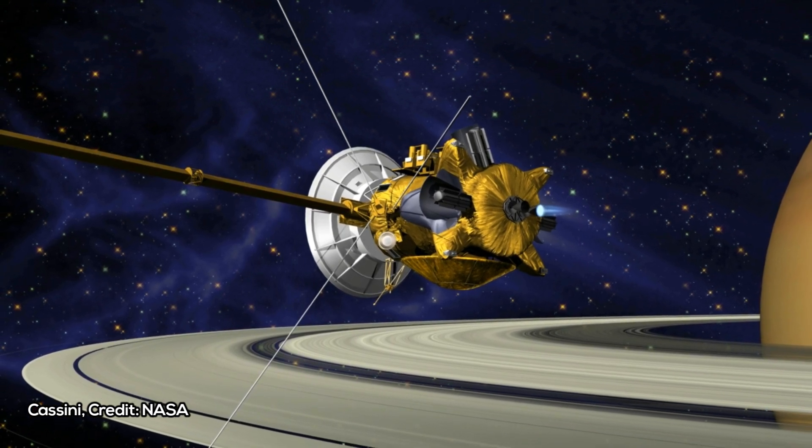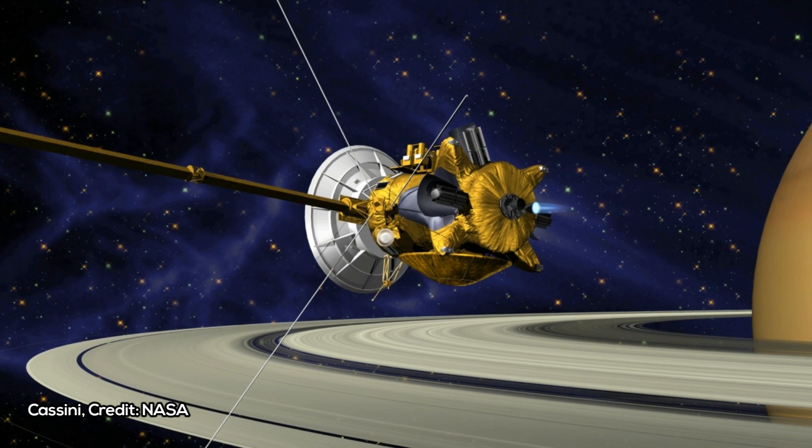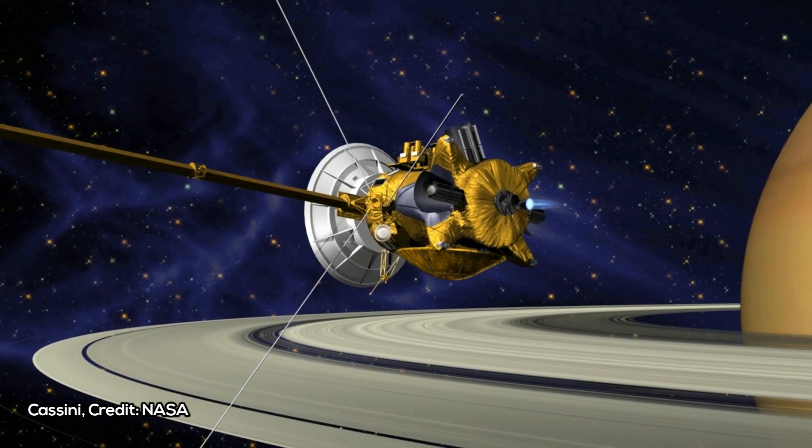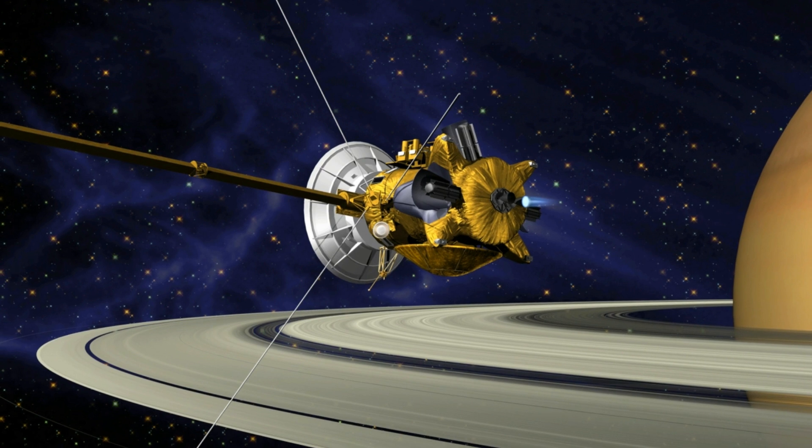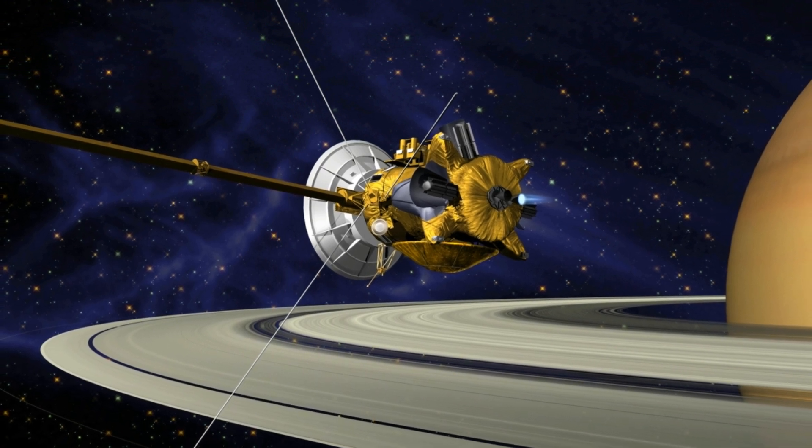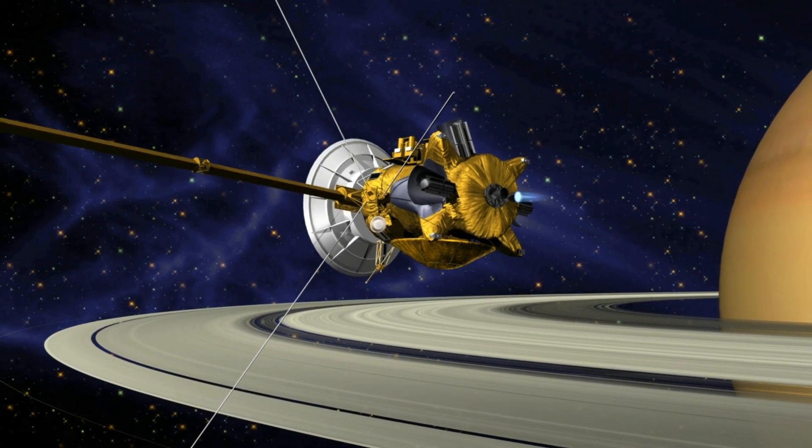Our entire solar system, including the heliosphere, moves through interstellar space. The prevalent picture of the heliosphere was one of comet-shaped structure, with a rounded head and an extended tail.